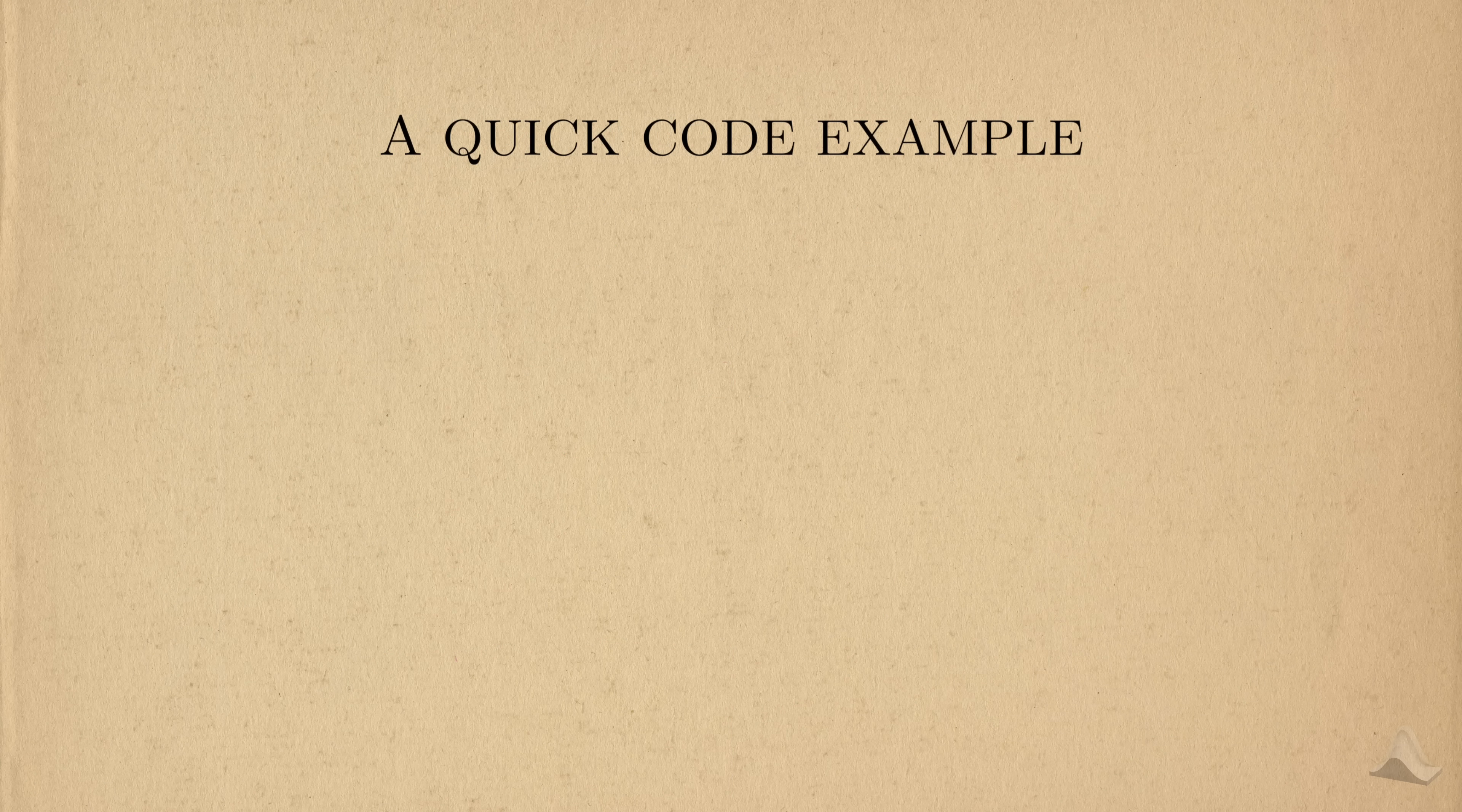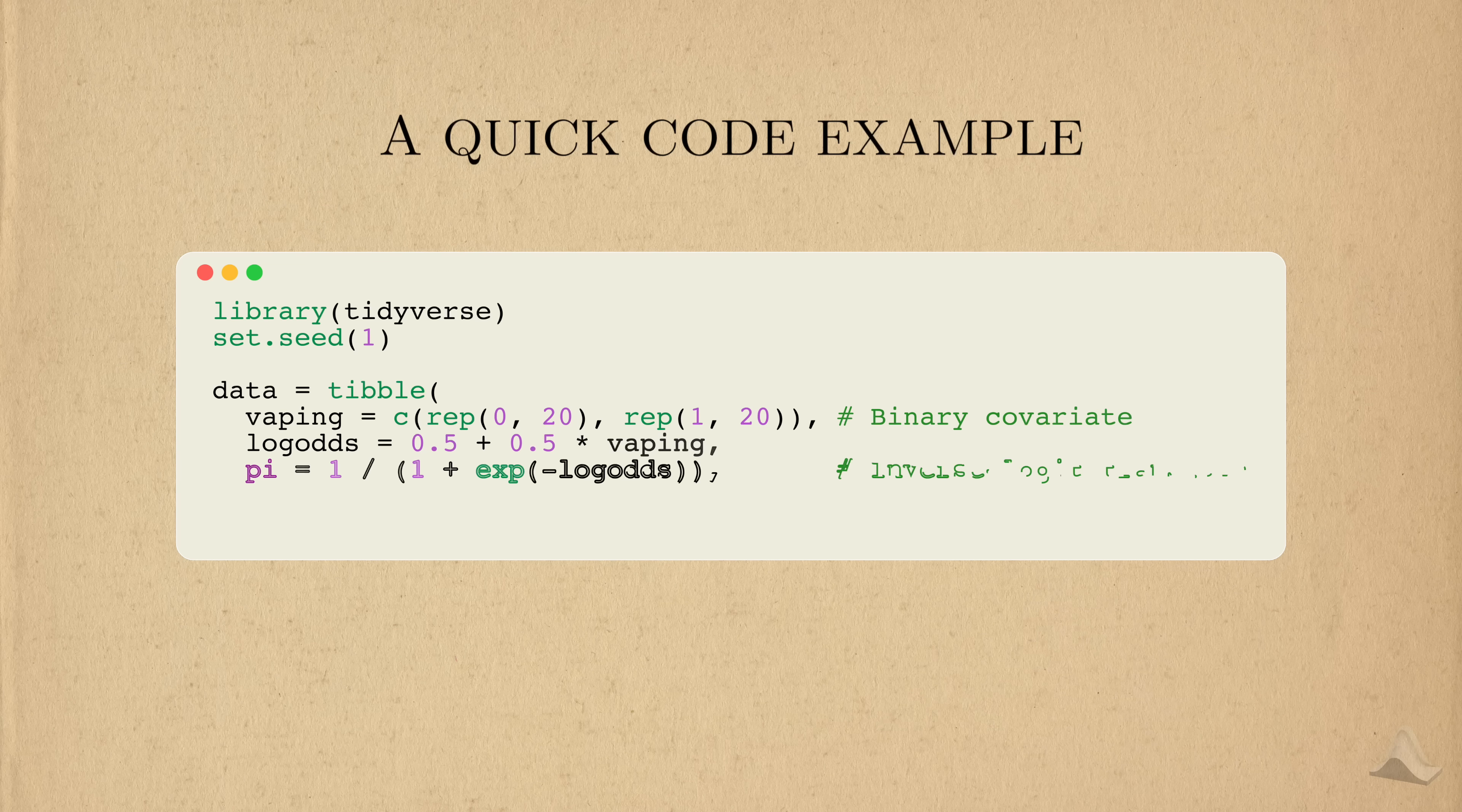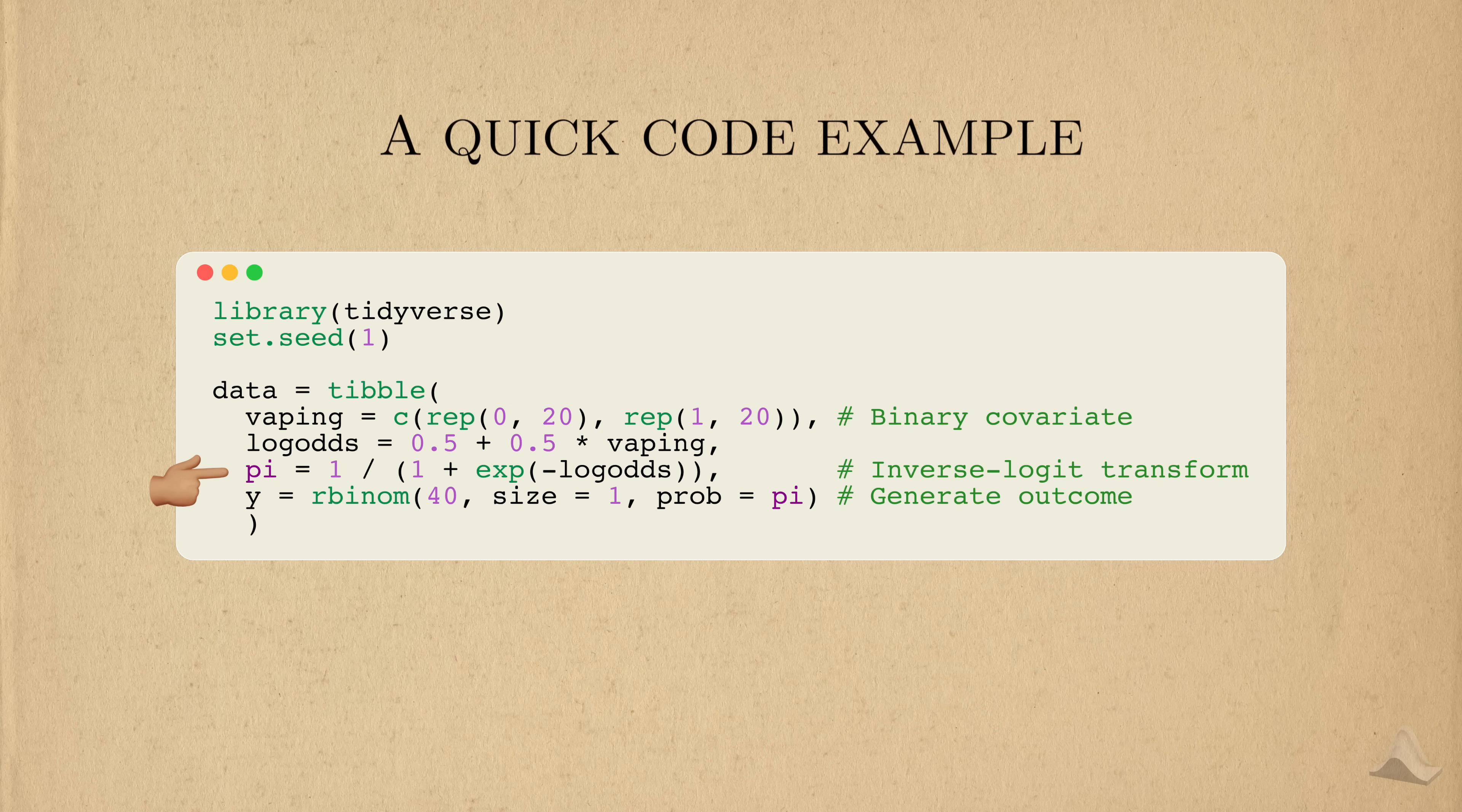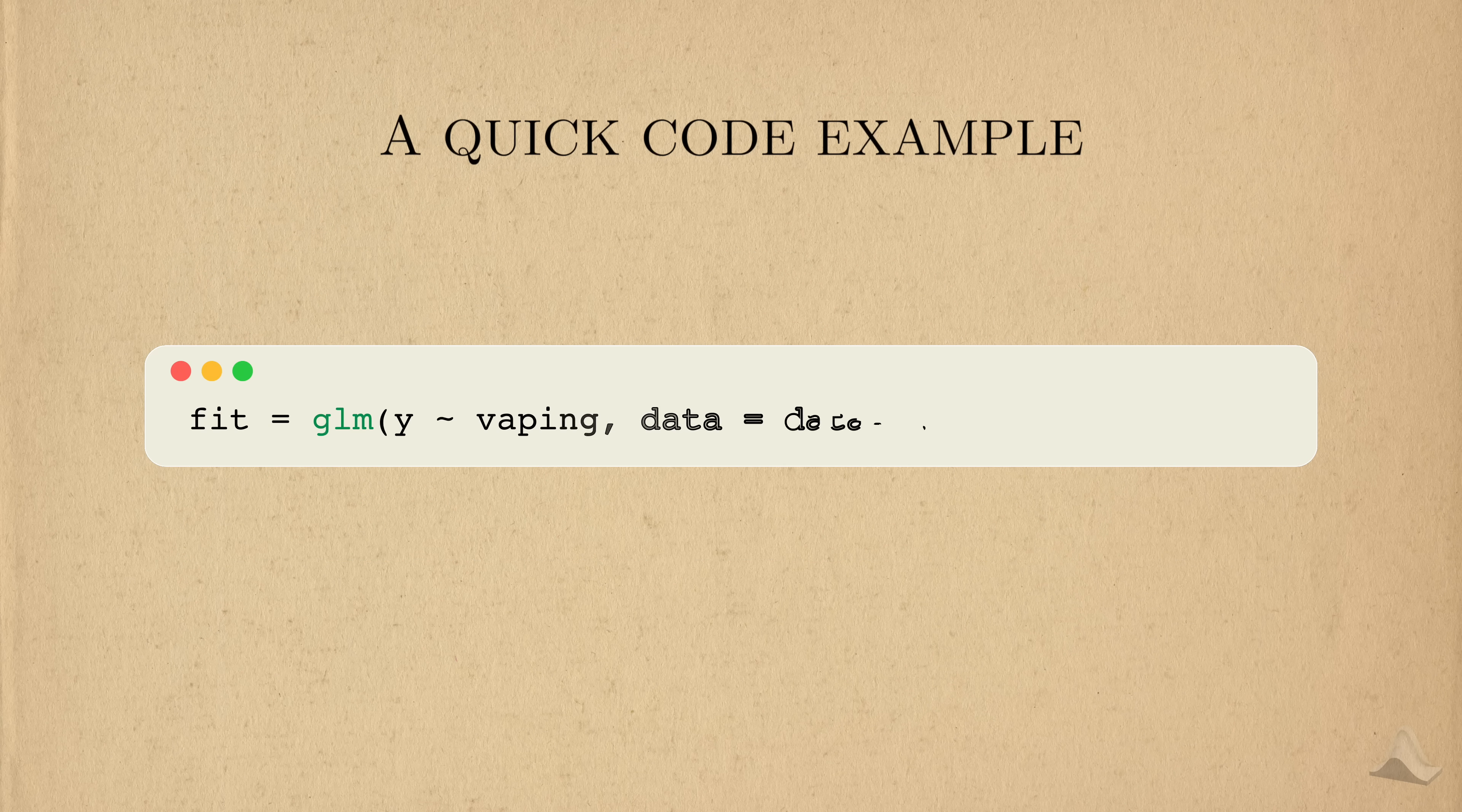Let's wrap up this video with the last bit of code. As usual, I'll generate some data according to the logistic regression model. You can see that I've written it so that vaping increases the log odds of getting lung cancer. I then use the inverse logic transform to get it back into terms of pi, and from there, this pi is used to generate the actual binary outcome.